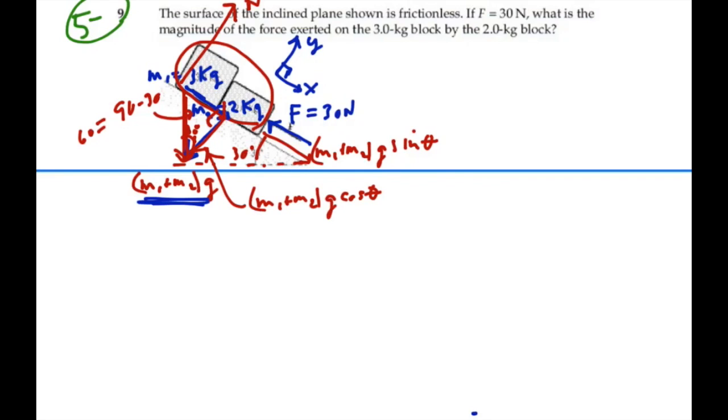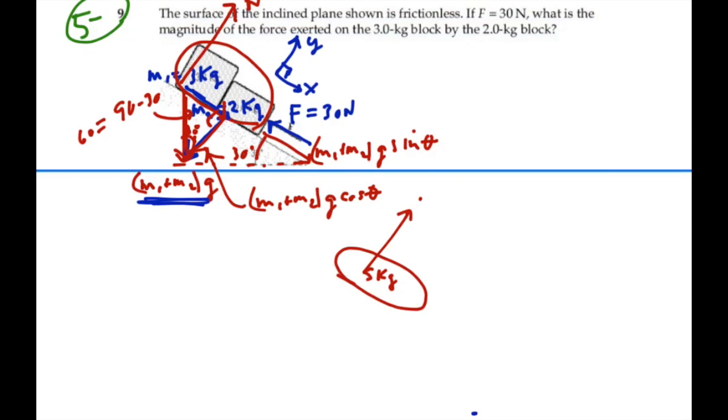Let's redraw this free-body diagram. We have a total mass of 5 kilograms, and our forces are a normal force. We have a gravitational force of m, total mass, g, cosine theta into the incline. We have a force down the incline of total mass, m g, sine theta. And then we have a force, f, pushing up, which we're told is 30 newtons.